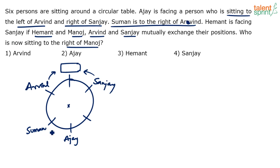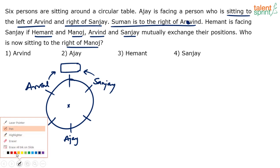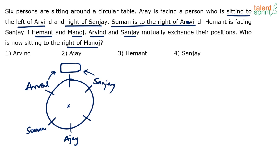Hemant is facing Sanjay — but right now it is actually Suman who is facing Sanjay. The clue says Hemant is facing Sanjay if Hemant and Manoj, and Arvind and Sanjay mutually exchange their positions. After the exchange, Arvind and Sanjay swap — so Arvind moves to Sanjay's original position (shown in red) and Sanjay moves to Arvind's position. After Hemant and Manoj exchange, Hemant ends up facing Sanjay.